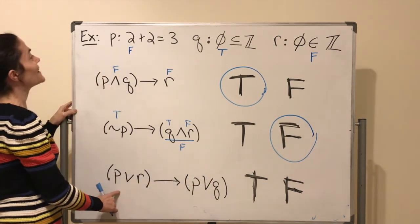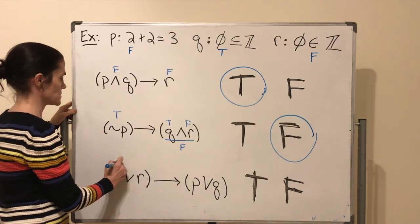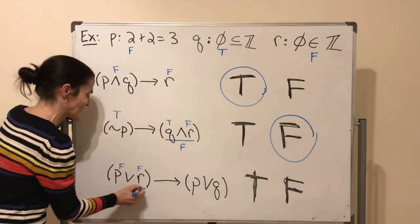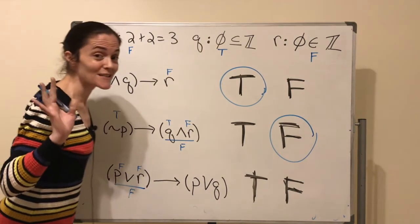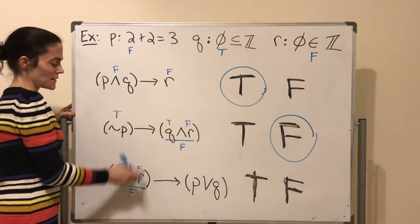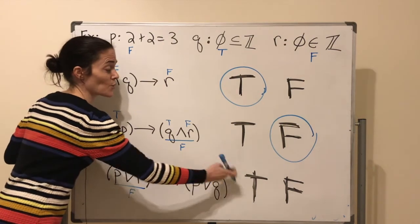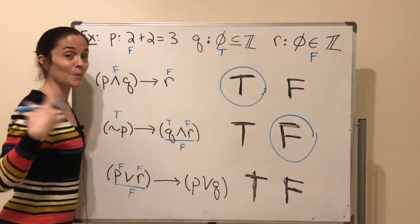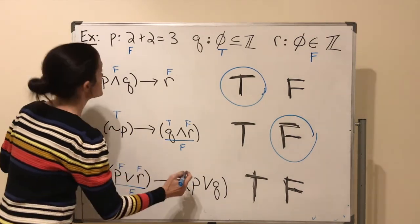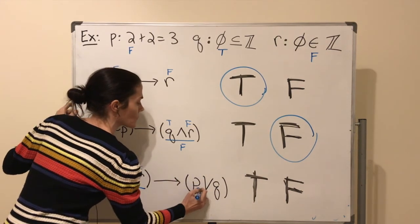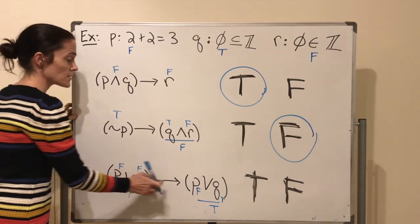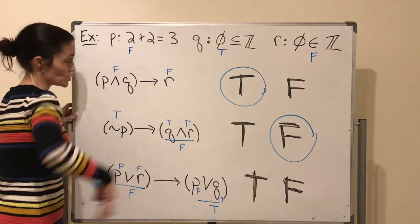Third: (p ∨ r) → (p ∨ q). p is false and r is false, so p ∨ r is false. With a false hypothesis the implication is true — but we can verify the right side: p is false and q is true, so p ∨ q is true. False implies true is true. So this final compound statement is true.